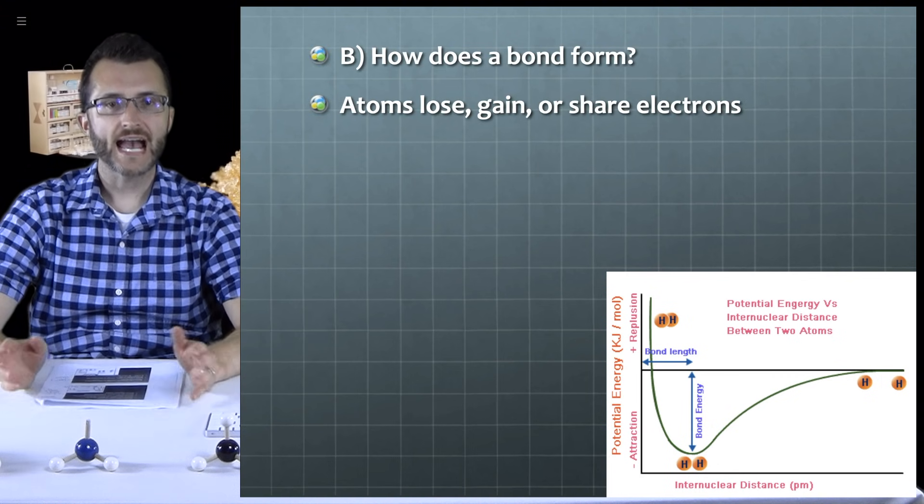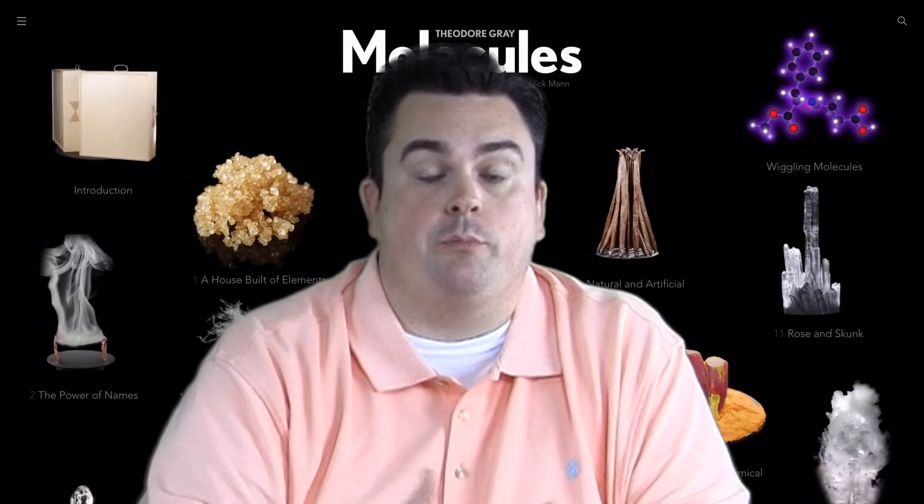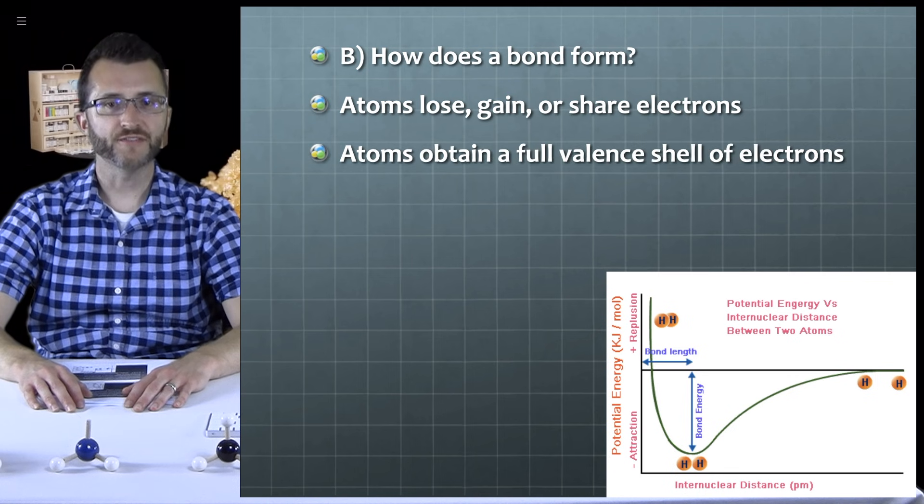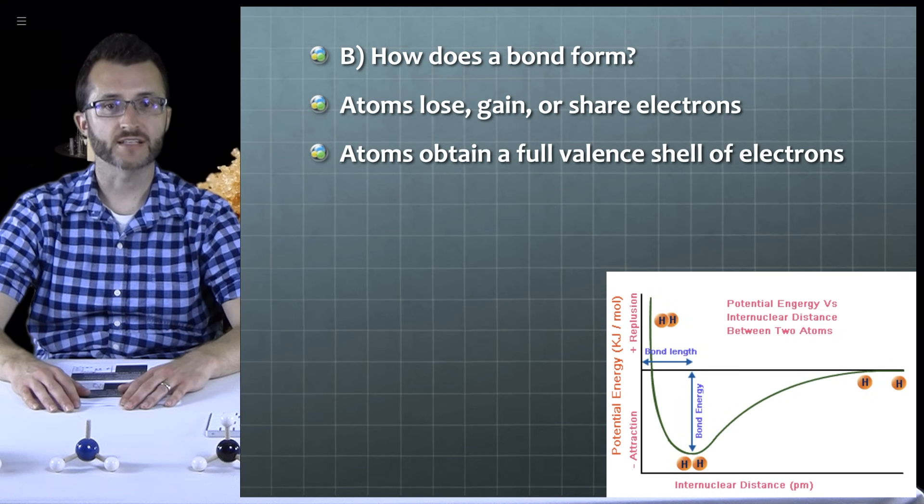How does a bond form? Atoms lose, gain, or share electrons. If you recall from the periodic table unit, we talked about metals tending to lose electrons, and non-metals tending to gain electrons. So bonds are formed from these tendencies of these different elements. Atoms obtain a full valence shell of electrons. That would be a noble gas electron configuration.